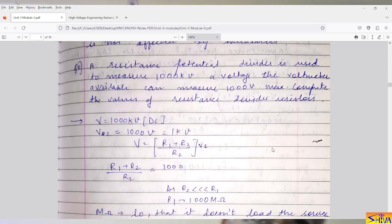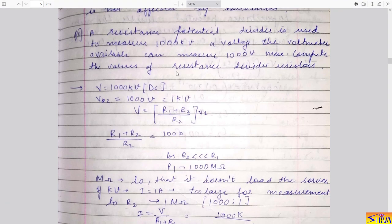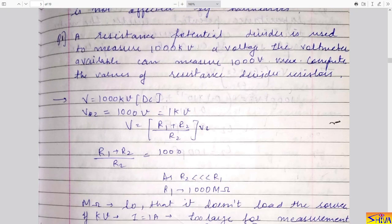Let us solve a numerical on the resistance potential divider. A resistance potential divider is used to measure 1000 kV DC voltage. The voltmeter available can measure a maximum of 1000 volts. We need to compute the values of the resistors in the resistance divider — not only the ohmic values but also the voltage or power ratings, in order to completely design the potential divider.